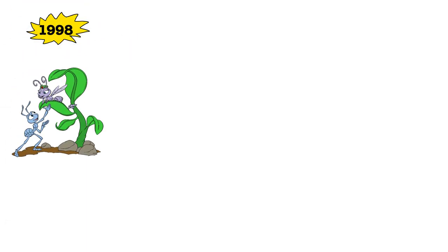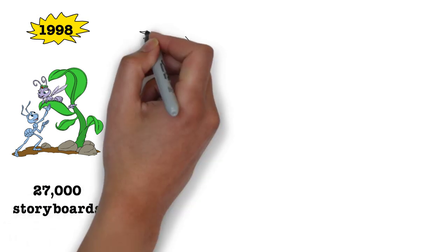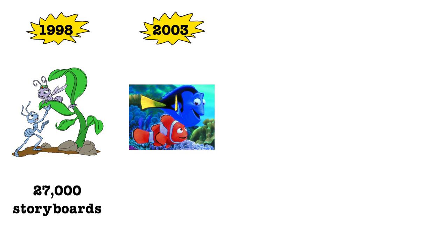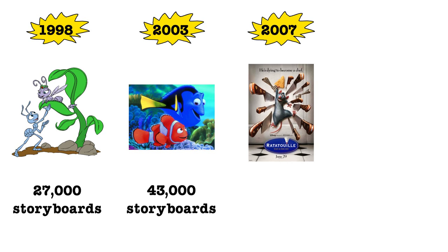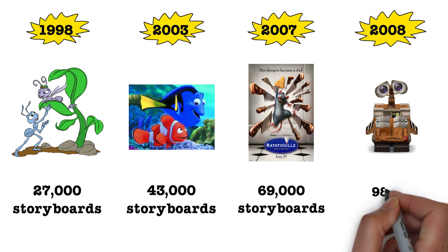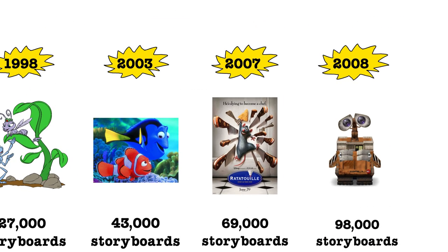In 1998, when they were producing A Bug's Life, they had 27,000 storyboards. In 2003, when they were creating Finding Nemo, they used 43,000 storyboards. In 2007, for the making of Ratatouille, they used 69,000 storyboards. And in 2008, for the making of Wall-E, they used 98,000 storyboards.